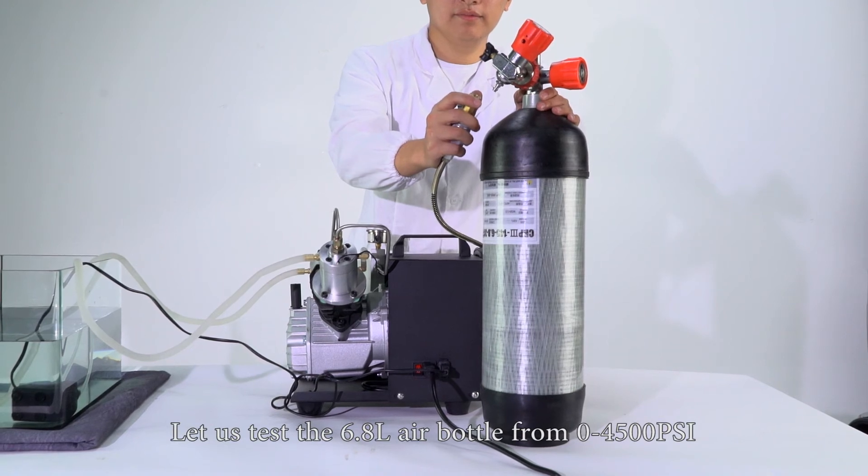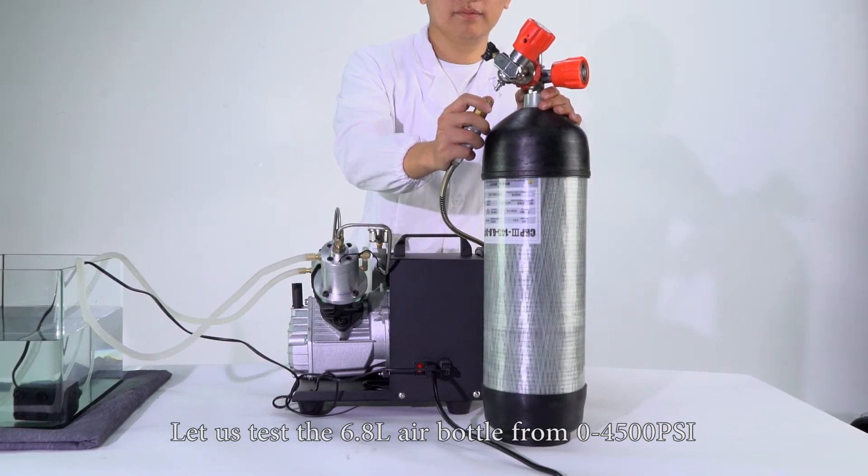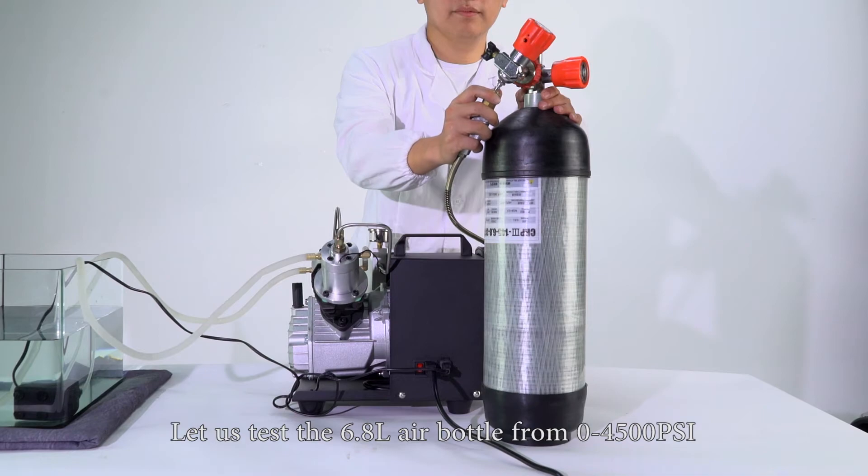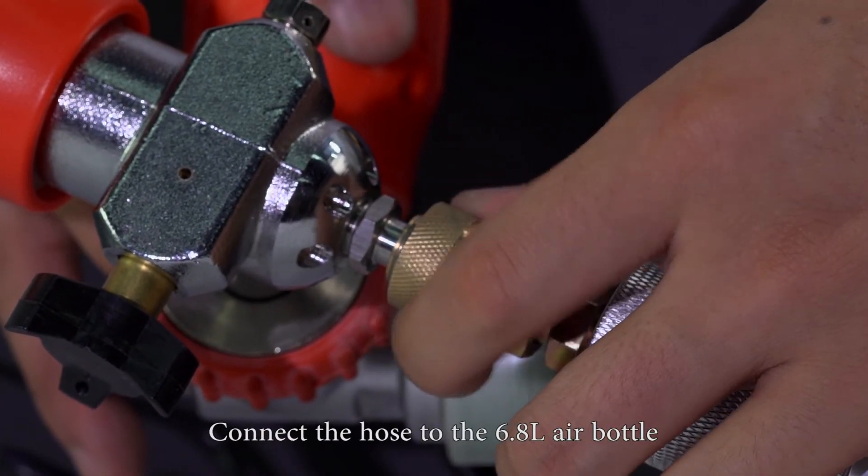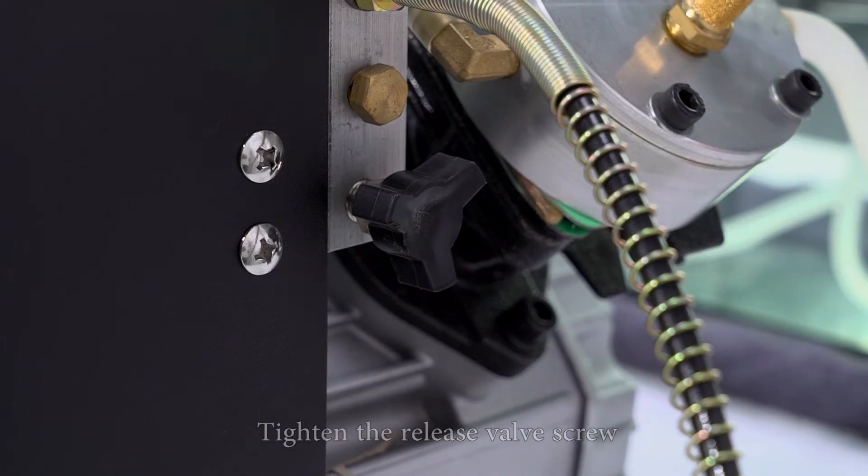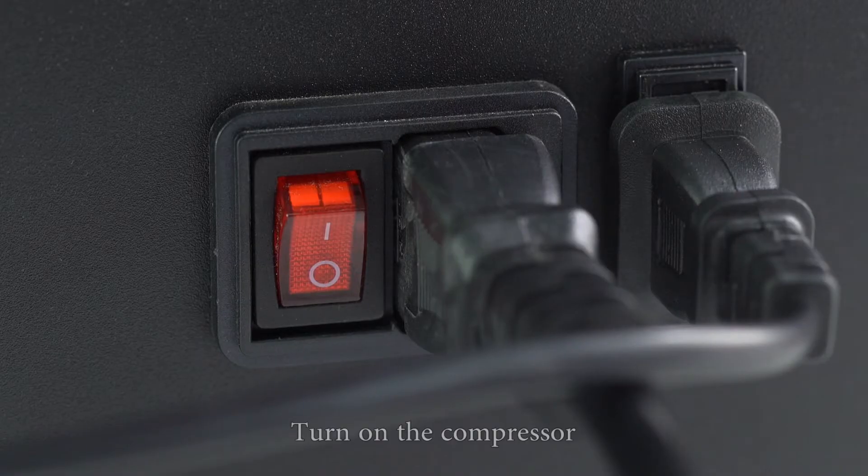Let's test the 6.8 liter air bottle from 0 to 4500 psi. Connect the hose to the 6.8 liter air bottle, tighten the release valve screw, and turn on the compressor.